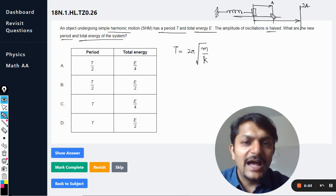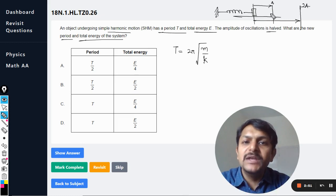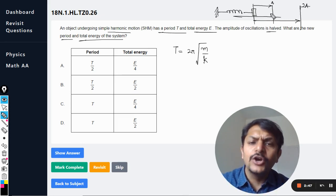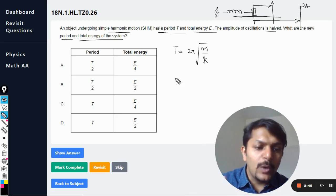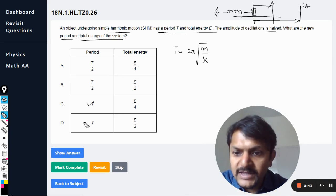Hence, more is the distance, more is the velocity, the time remains the same. That is why the body will reach the mean position in the same time and it will be completely independent of the amplitude.